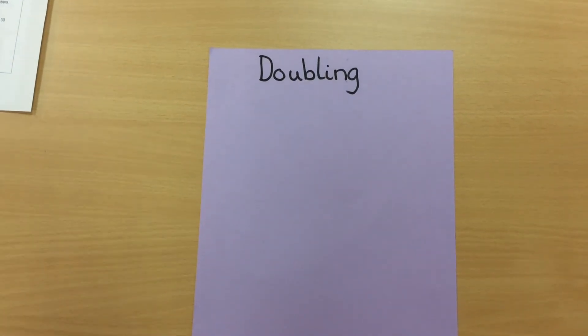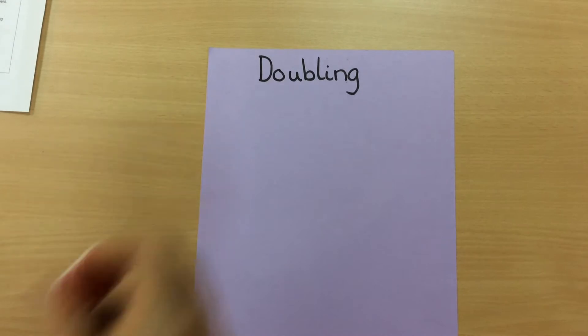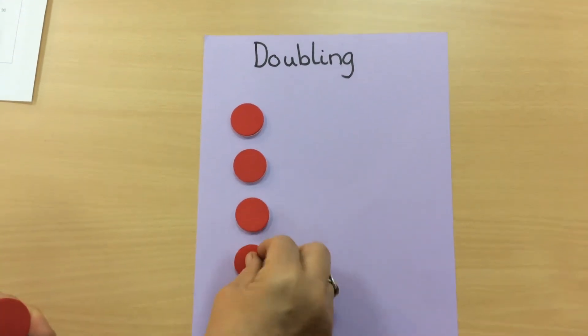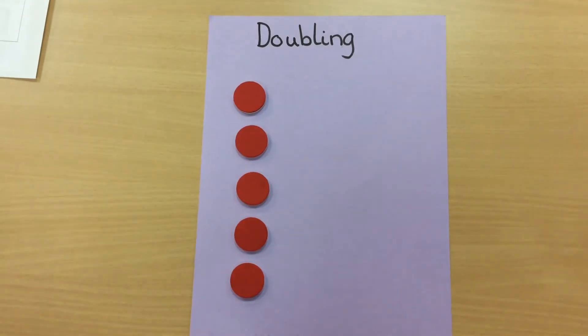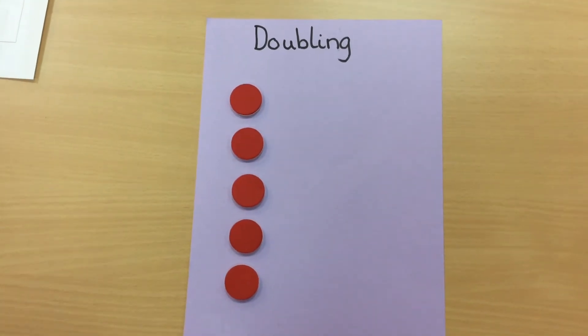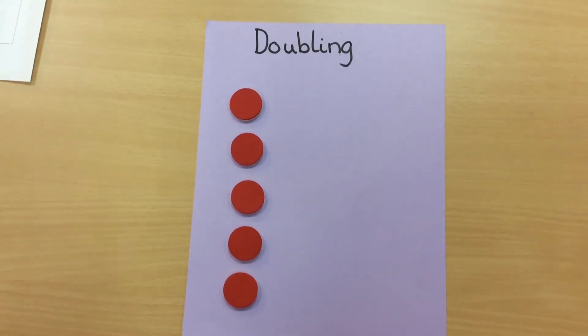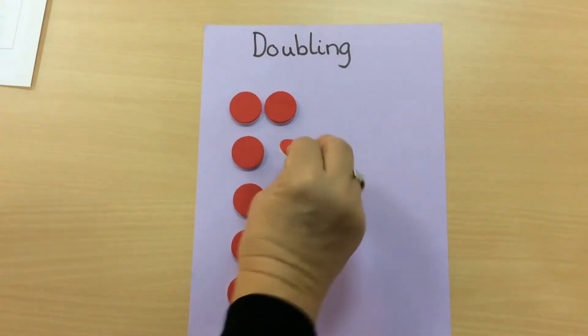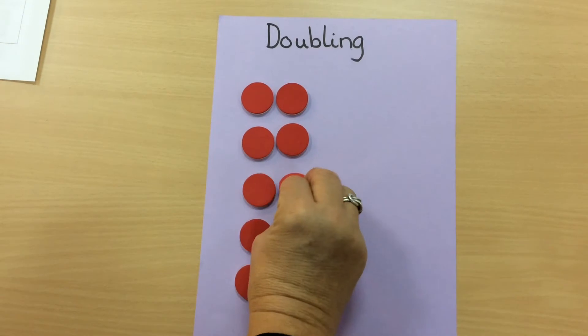For example, five counters and the children need to find double. That means each counter needs a partner, so they can put them next to each other so that they can see each one has got a partner.